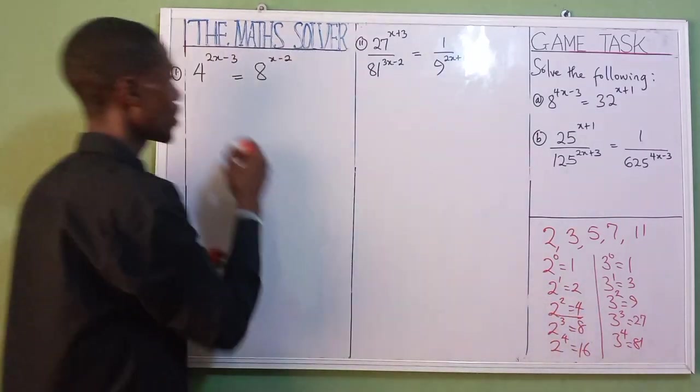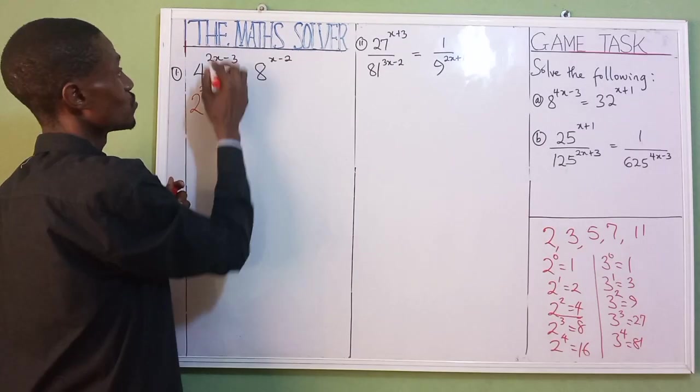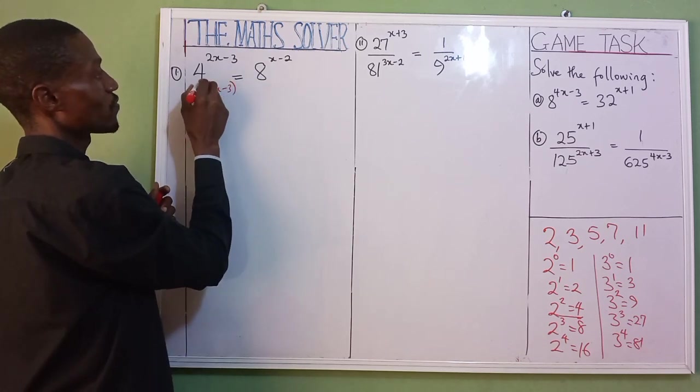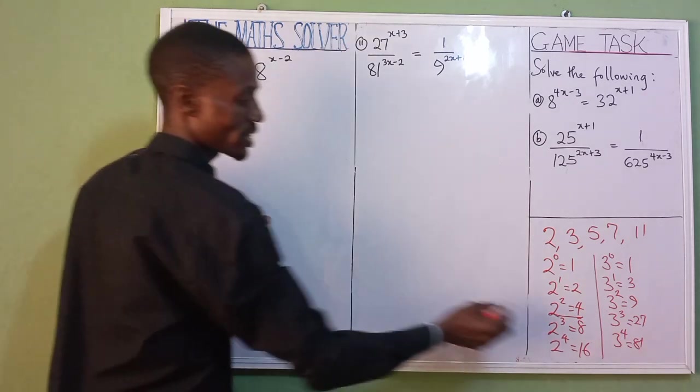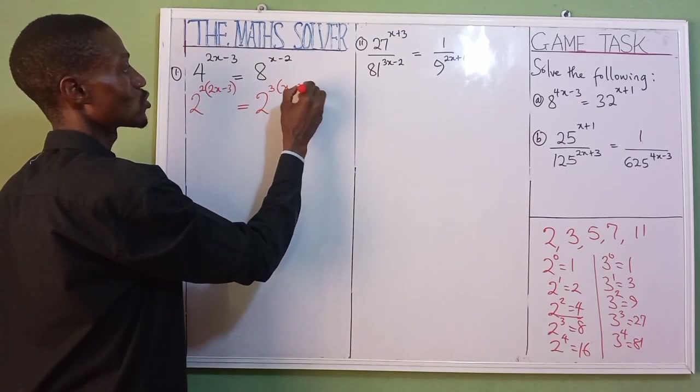As you can see, for our 4, that is 2 raised to the power of 2. Just write 2 raised to the power of 2 into bracket (x minus 3). Don't forget, 2 raised to the power of 2 represents the 4. If it should be 8, our 8 is 2 raised to the power of 3. Write 2 raised to the power of 3 into bracket (x minus 2). Good.